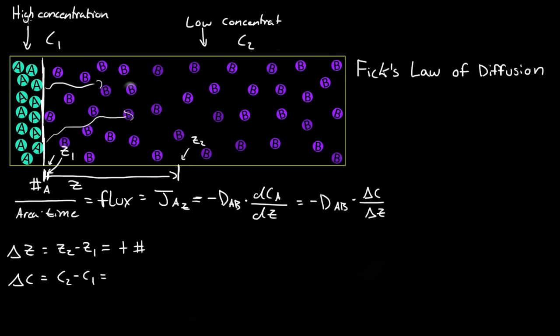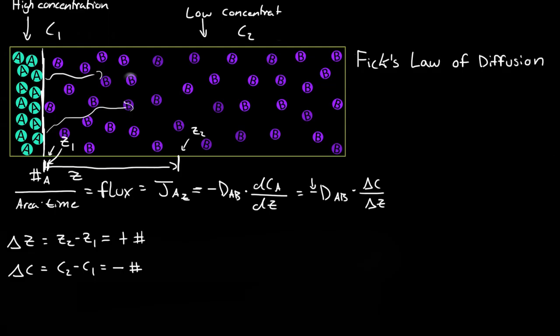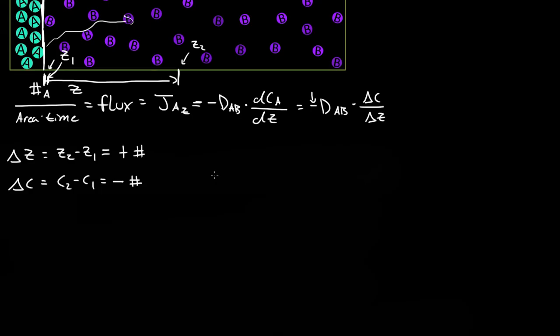And this is a high concentration, or a large concentration. So this is actually going to be, the delta C is actually going to be a negative number. And that's actually why there's a negative right here. So that is the purpose of this negative, is so that the flux of A in the Z direction is positive.